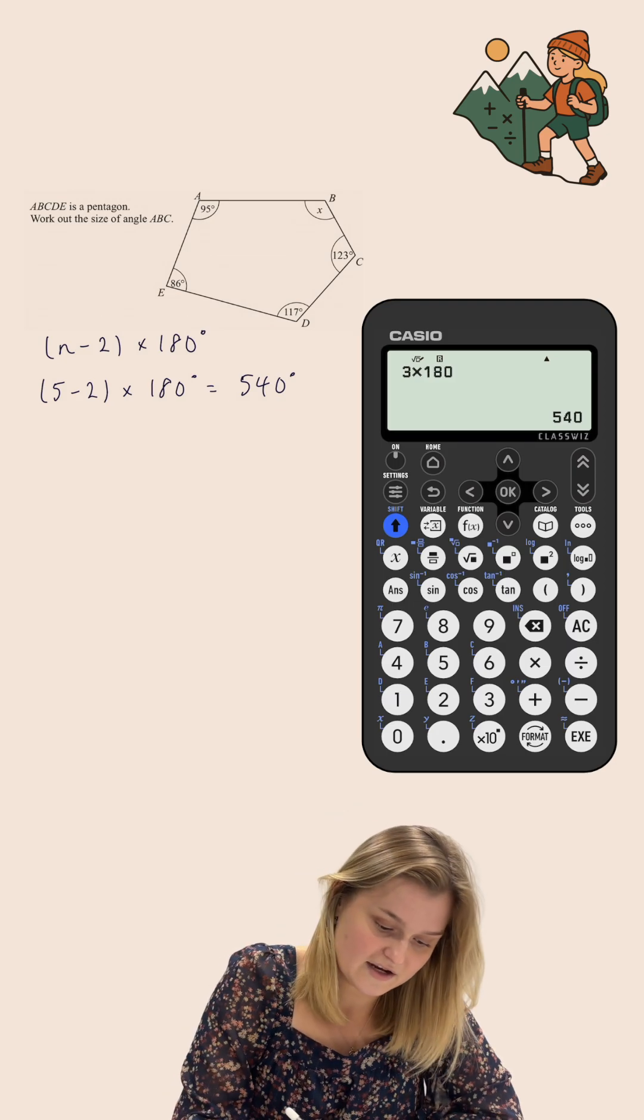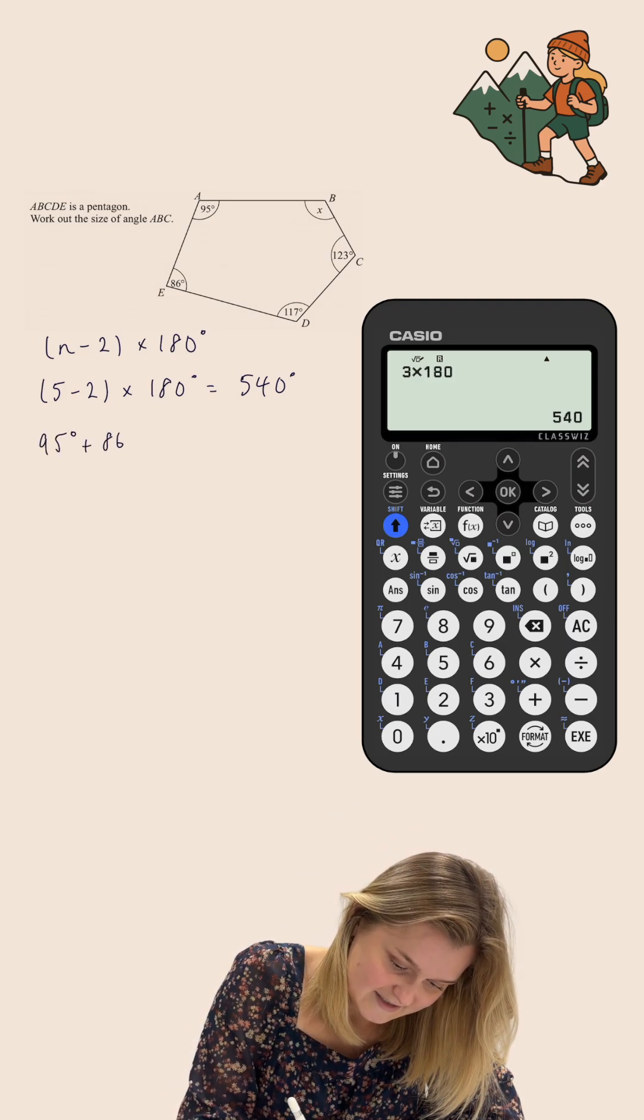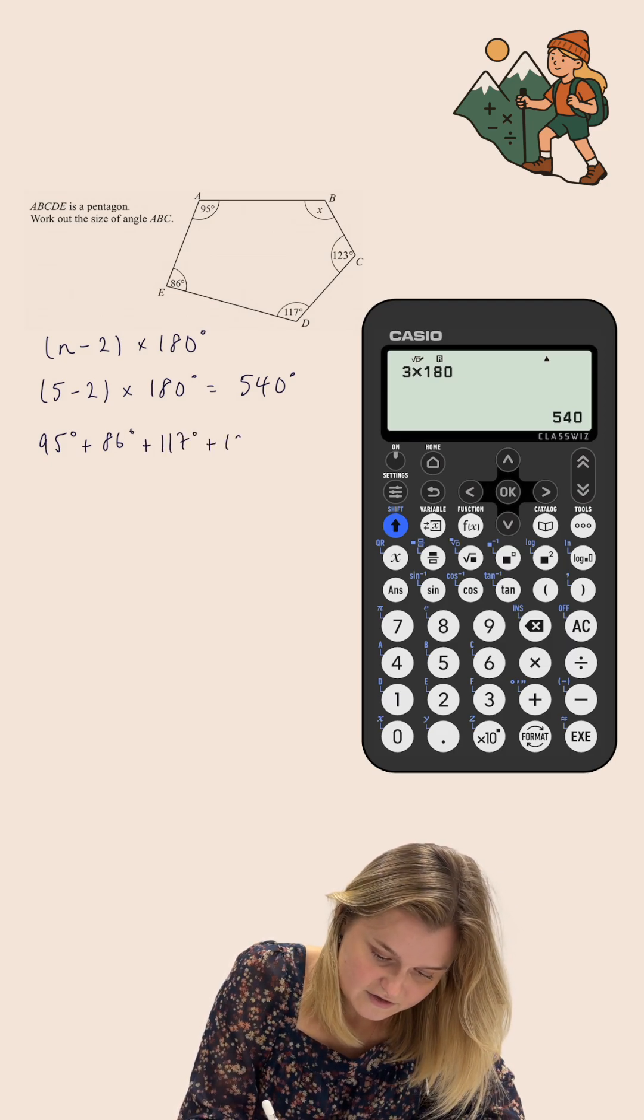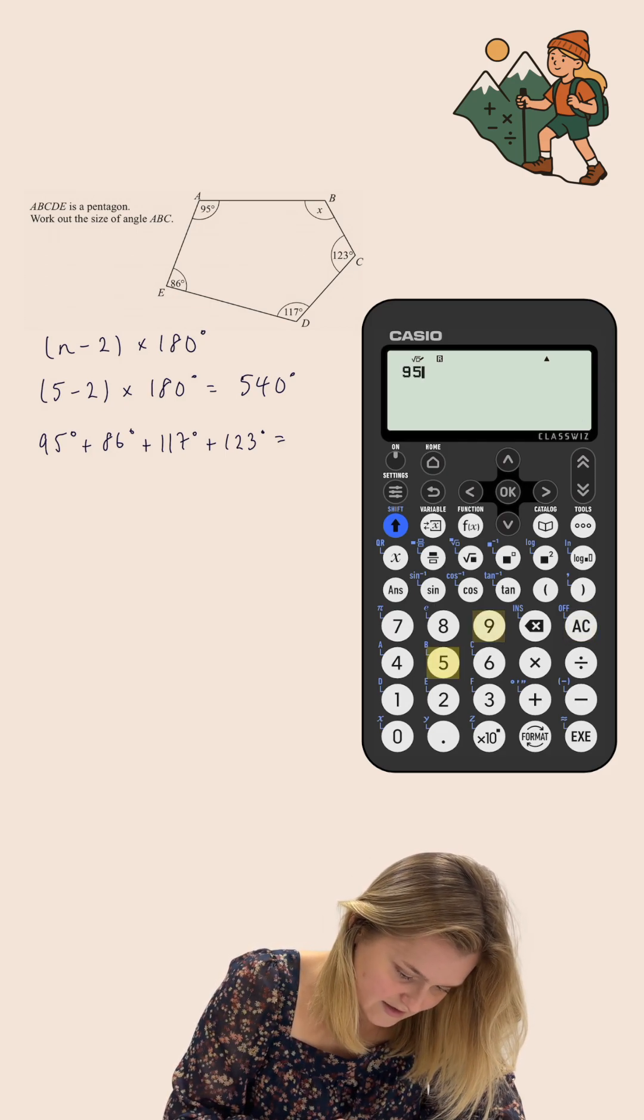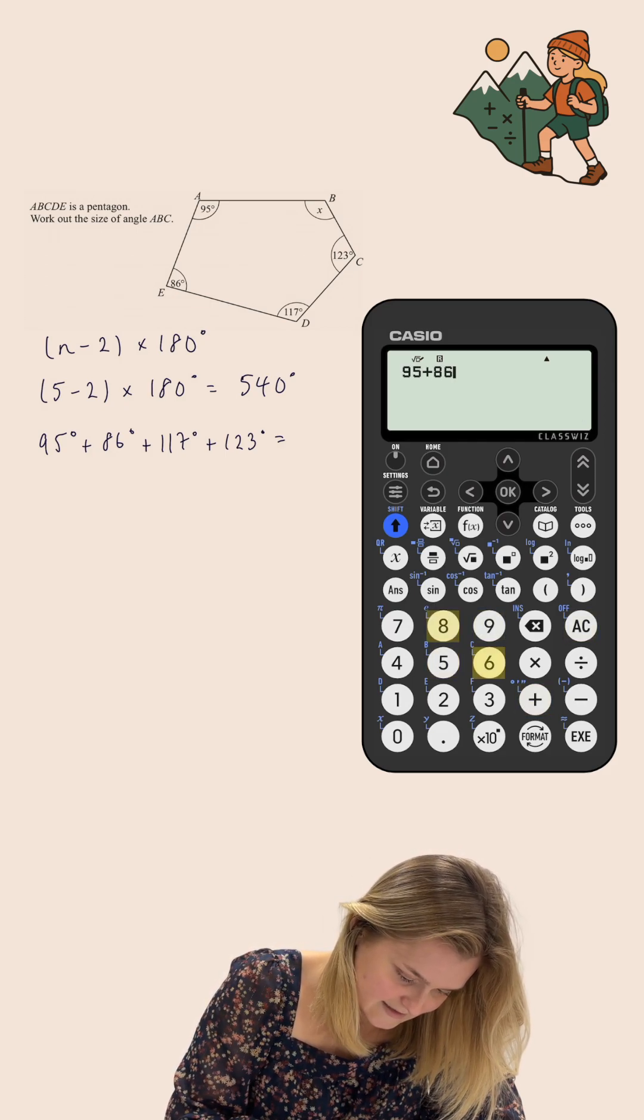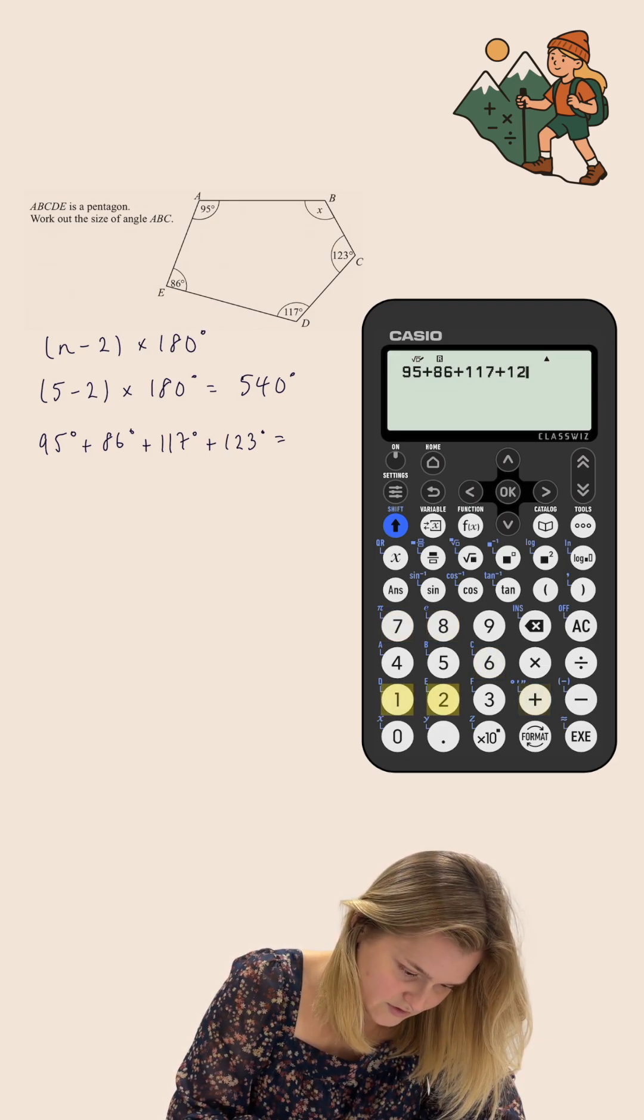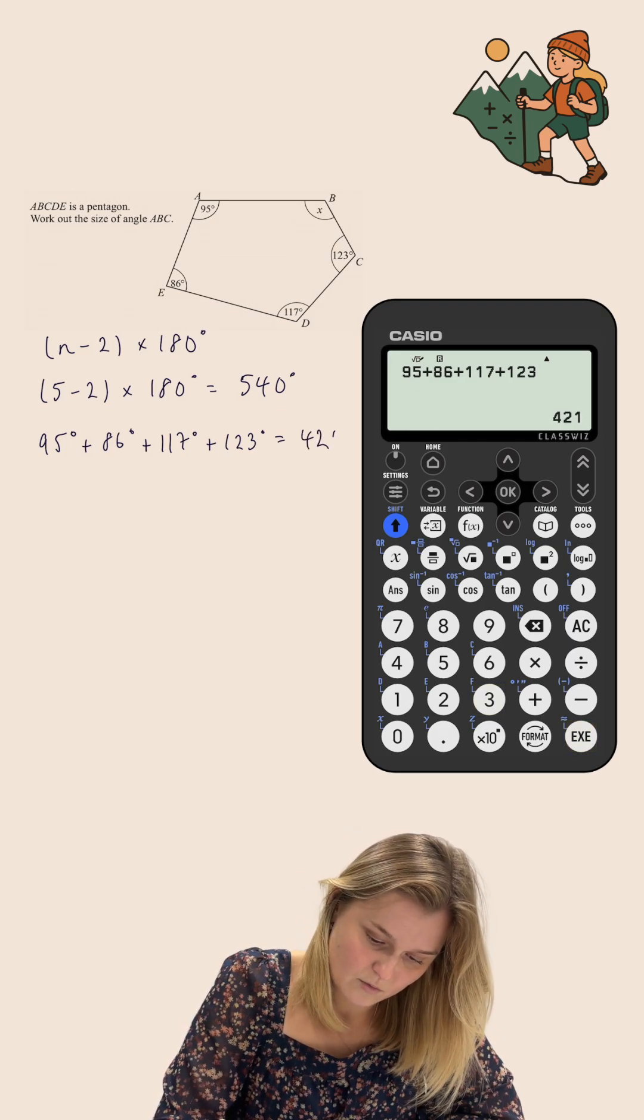Next, I'm going to add up the 4 angles that I know. So, I'm going to do 95 degrees, add 86 degrees, add 117 degrees, add 123 degrees. Now, if I add these together, so I've got 95, 86, 117, and 123, that gives me 421 degrees.